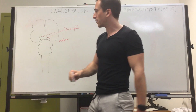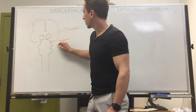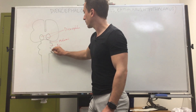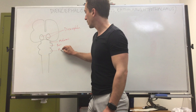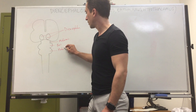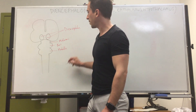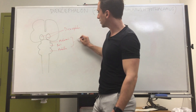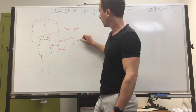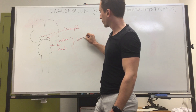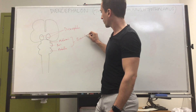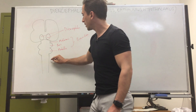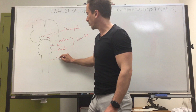As we go below, we've got the midbrain, which is the mesencephalon, then the pons, then the medulla — all three of which make up the brain stem — and then the spinal cord.